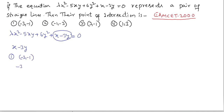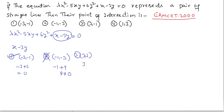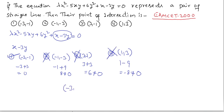First option gives zero, so it satisfies. Checking second option (-1, -3): -1 + 9 = 8, not equal to zero — wrong. Third option (3, -1) and fourth option (1, 3): 1 - 9 = -8, not equal to zero — fourth option also wrong. The point of intersection is (-3, -1).